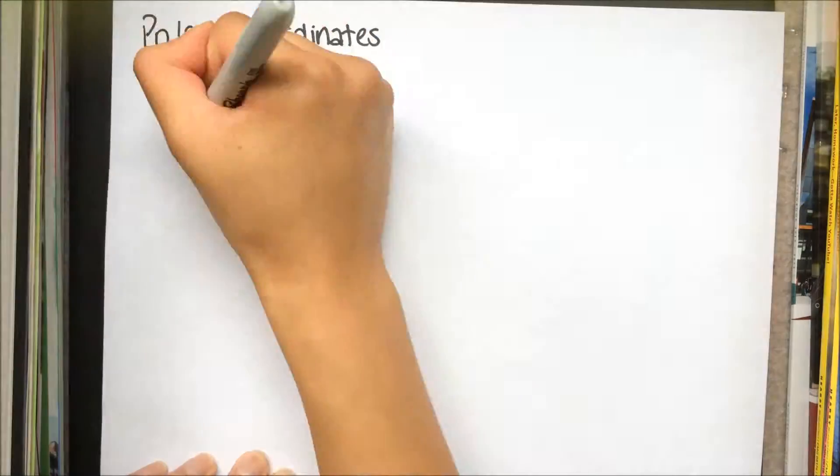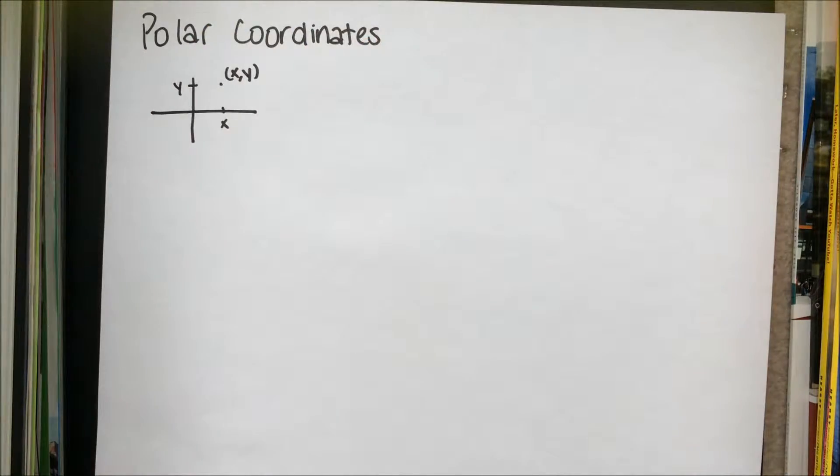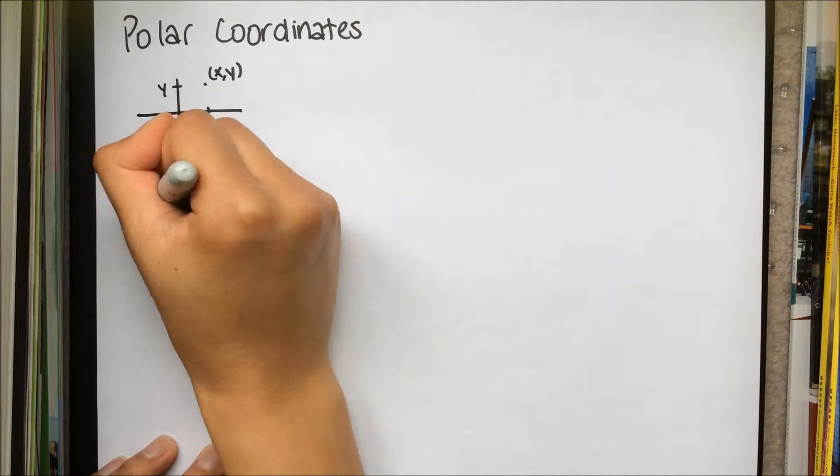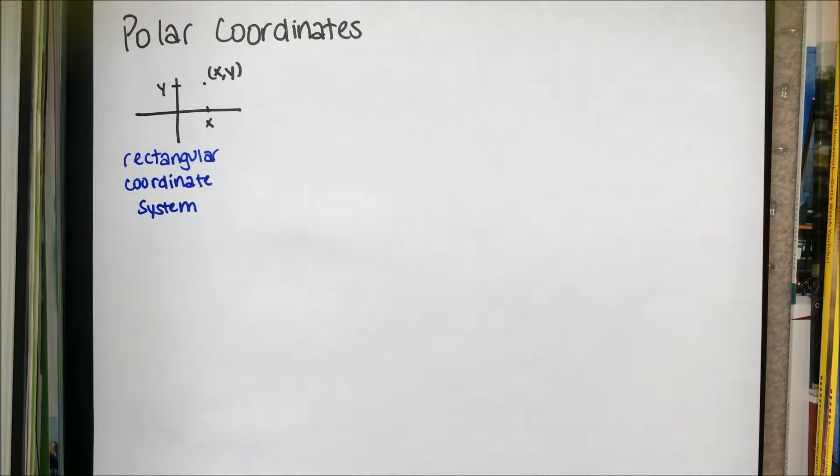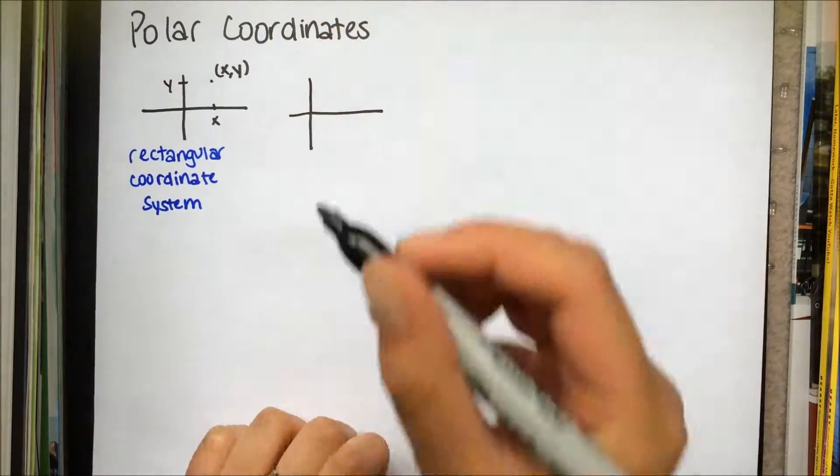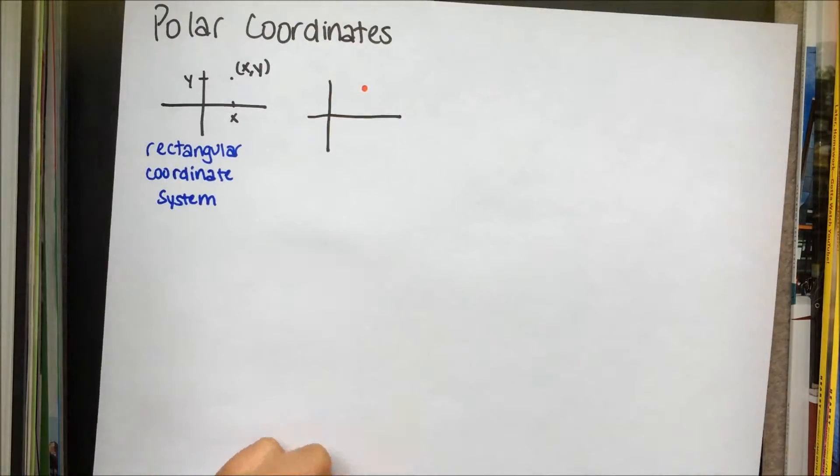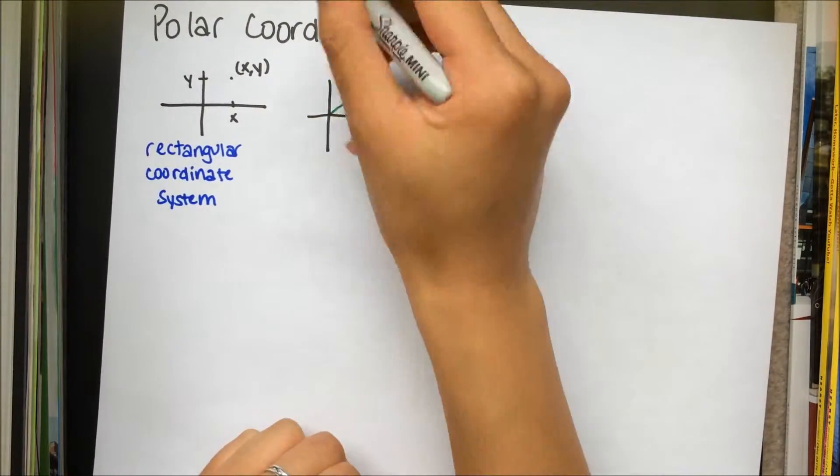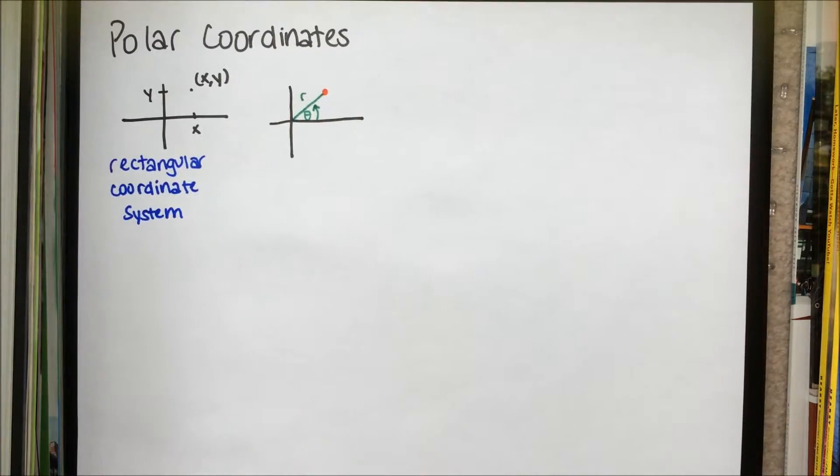Polar coordinates. The rectangular coordinate system is the most commonly used system. The polar coordinate system uses two values: the distance between the point and the origin and an angle in radians from the positive x-axis in the counterclockwise direction.